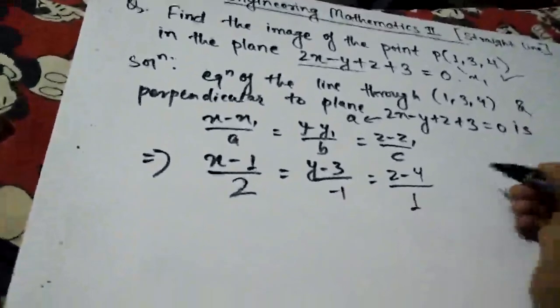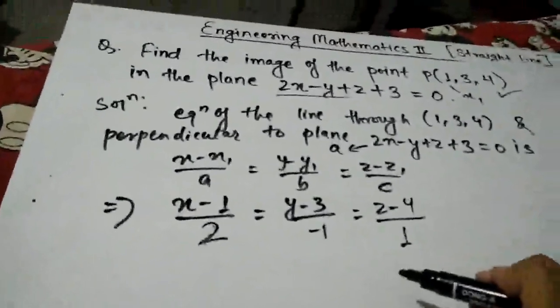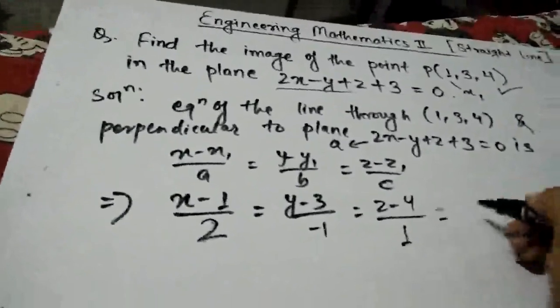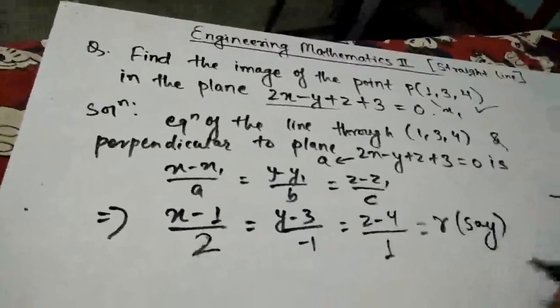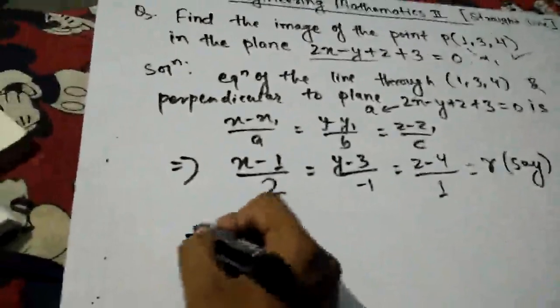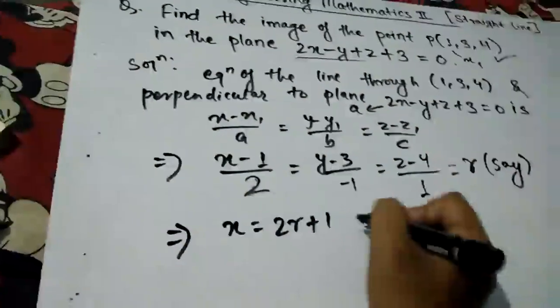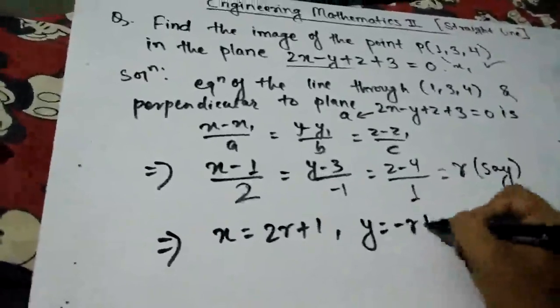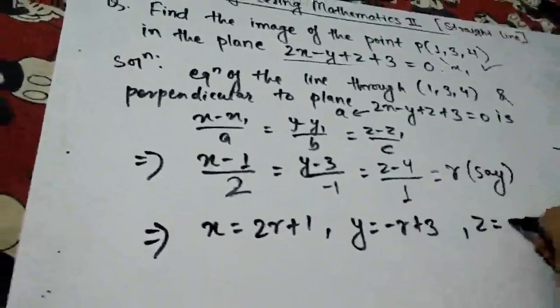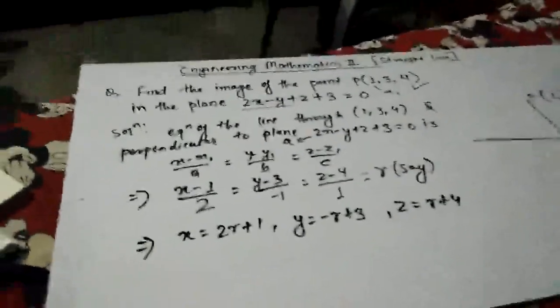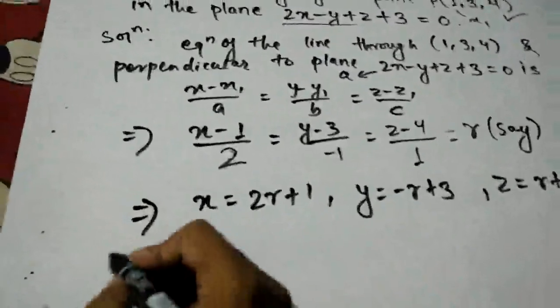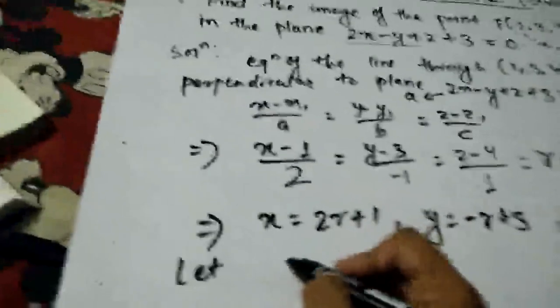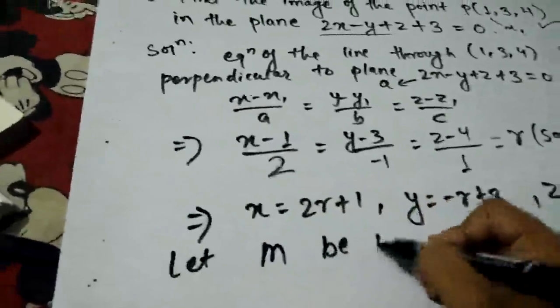To find point M, we express the coordinates in terms of a variable R. So we get: x equals 2R plus 1, y equals minus R plus 3, and z equals R plus 4.